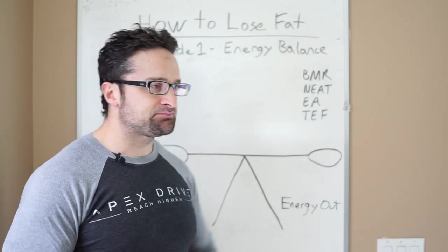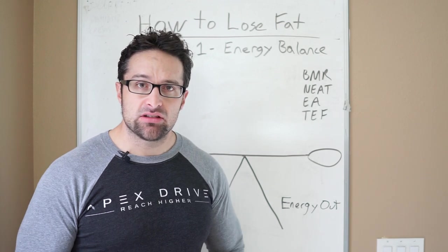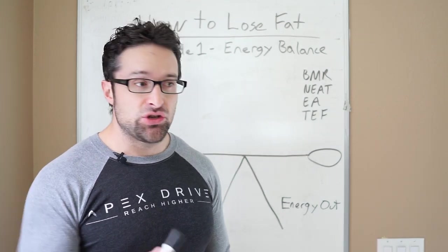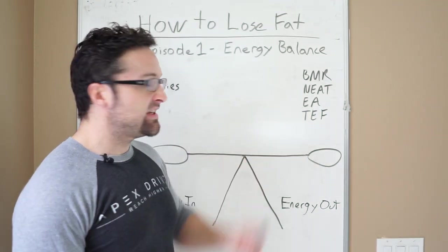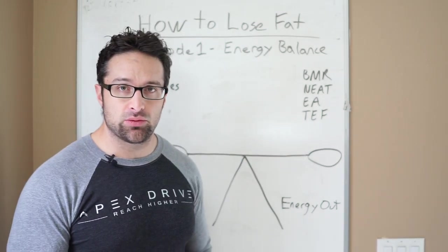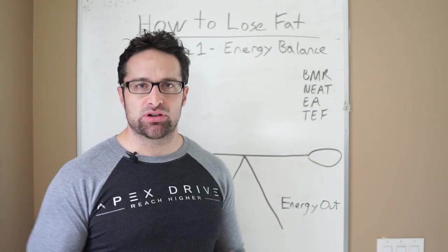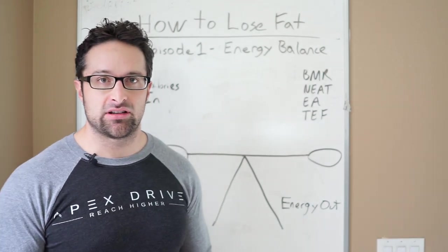Just moving around going through your day-to-day tasks, that's NEAT. And then EA is exercise activity, so that's the amount of energy you expend doing your daily exercise. And then you have TEF, which is the thermic effect of food, and the thermic effect of food is about 10% of your daily caloric output or your daily energy output.